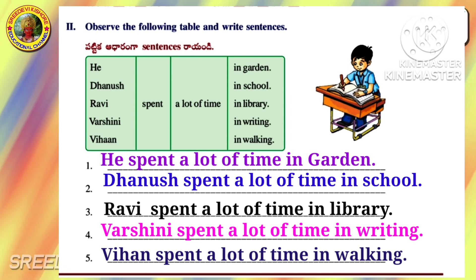Blossoms 4 Workbook, Unit 6: The Seed of Truth. Worksheet 6.8 and 6.9, Page Numbers 103, 104, and 105.